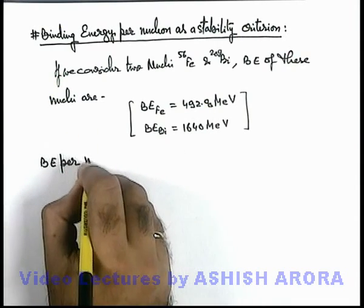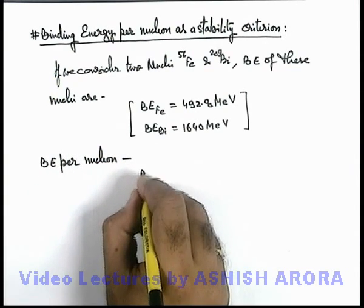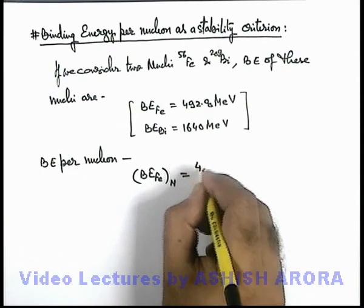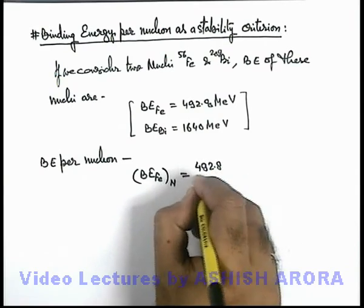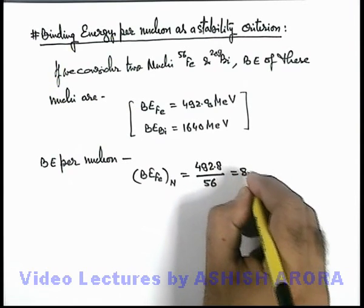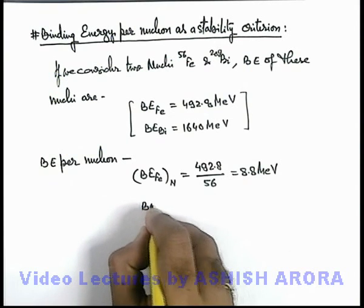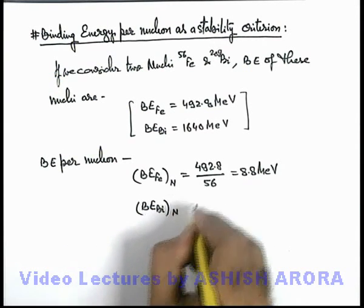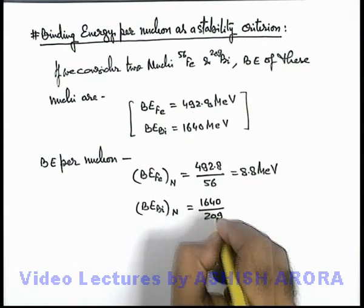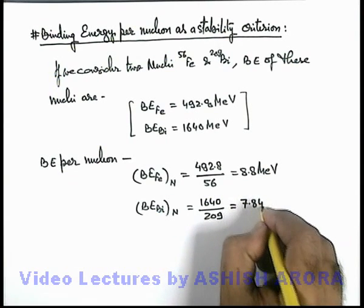The binding energy per nucleon for iron is 492.8 divided by 56 — because the number of nucleons in iron is 56 — and this gives us 8.8 MeV. Similarly, if we calculate the binding energy per nucleon for the bismuth nucleus, it is 1640 divided by 209, and the value comes out to be 7.84 MeV.